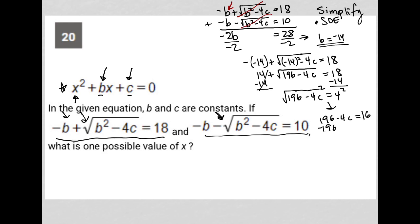Subtract 196 from both sides. A lot of math here. I'm left with -4c = -180. Divide both sides by -4. And I'm left with c = 45.